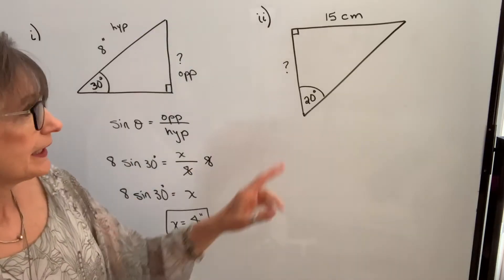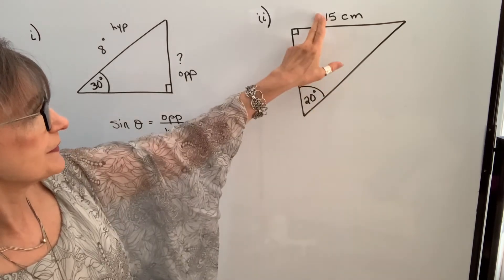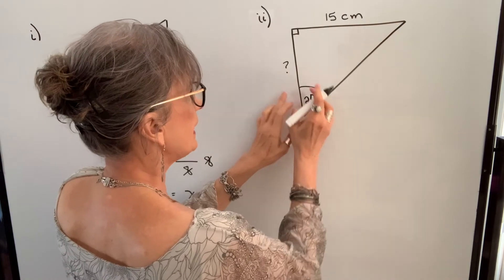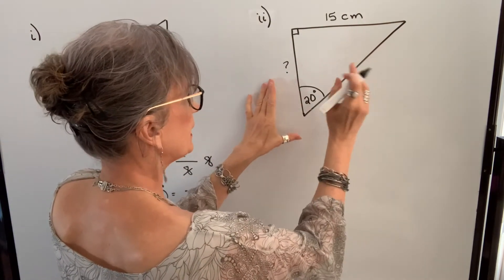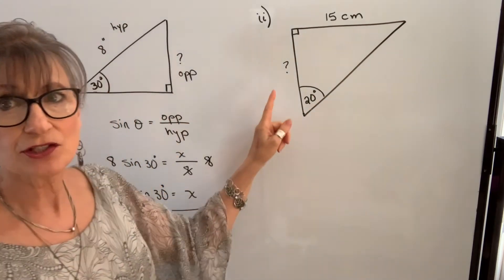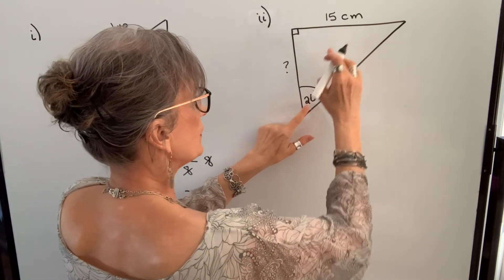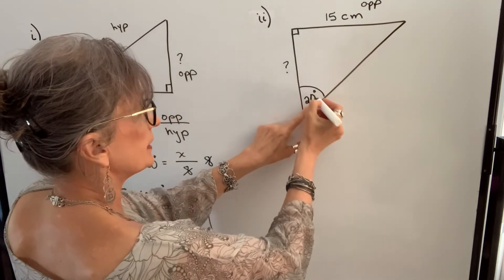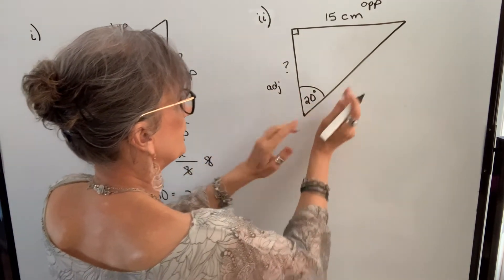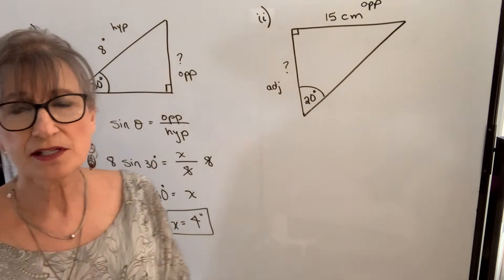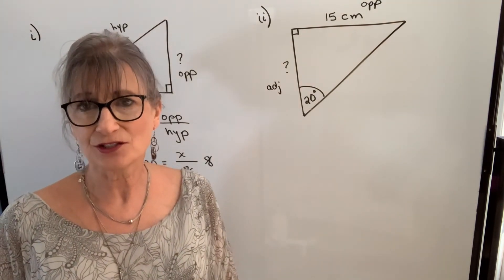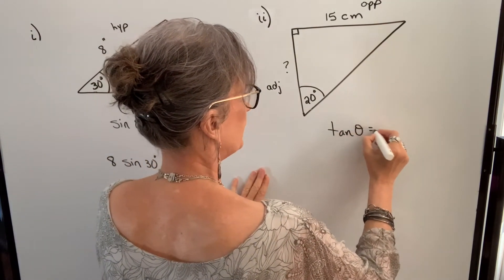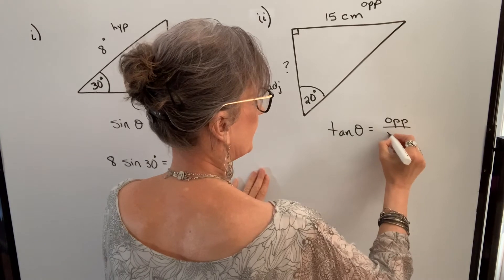Let's do another example. In this triangle, we know this angle, we know this side, and we're asked to find this side. We don't care about the hypotenuse, so let's name these two sides in relation to this angle. The side across or opposite 20 degrees would be this side — so this is the opposite side. The side adjacent to the angle is this side. The trig function that uses the side opposite and the side adjacent is the tangent function, so we know that the tangent of our angle will be defined as the opposite side divided by the adjacent side.